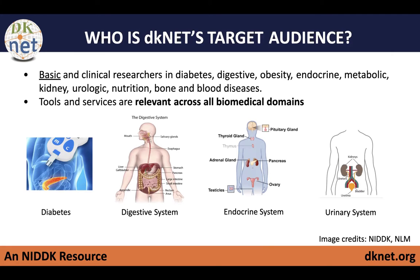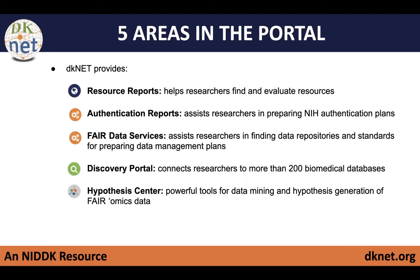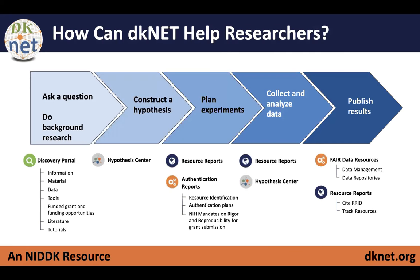As you'll see when I go through some examples, an antibody used in something specific for NIDDK could also be used for cancer research or neuroscience. There are five primary areas in which we are providing information right now, and these different items apply in various aspects of the research process — as one plans an experiment, constructs a hypothesis, collects and analyzes data, and publishes results.